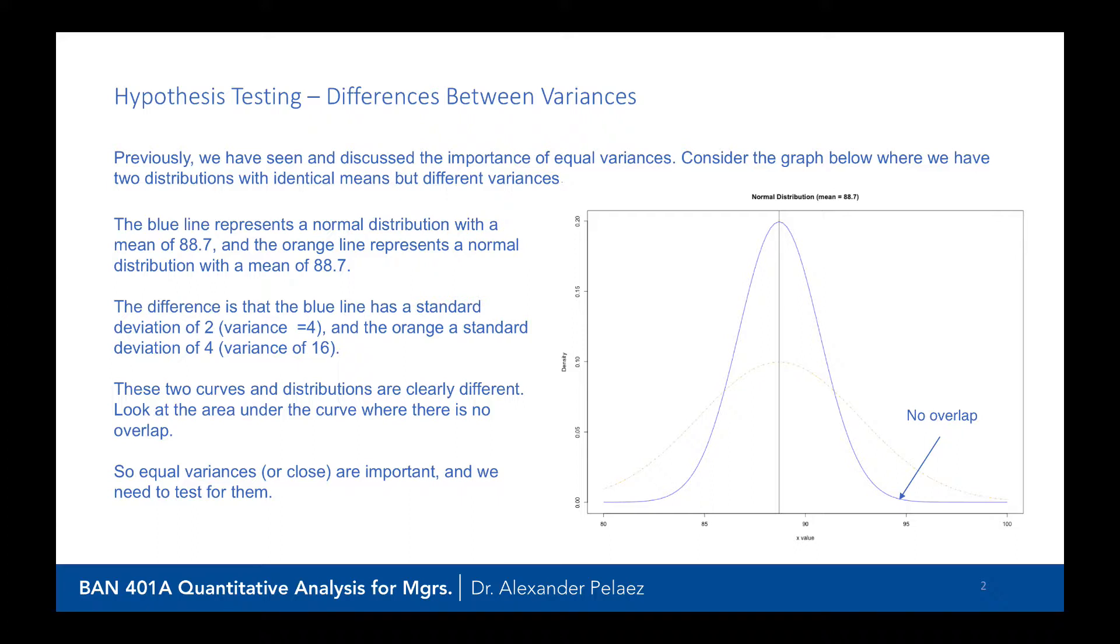They both have an identical mean of 88.7. However, their standard deviations are different. The blue curve has a standard deviation of 2, which means the variance is 4. And the orange has a standard deviation of 4, which means its variance is 16.